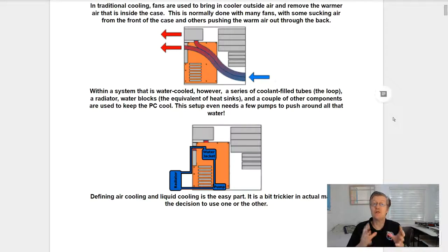In traditional cooling, fans are used to bring in cooler outside air and remove the warmer air that is inside the case. This is normally done with many fans. We have some sucking air from the front of the case and others pushing the warm air out through the back as you can see in this diagram. So the cooler air is coming in usually from the bottom or from the front of the case. It goes over the hot components, then exhausts through the back or through the top.